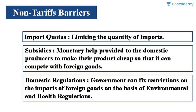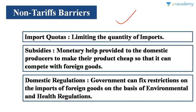There are also indirect methods — these stop imports from coming into the country without directly imposing tax. These indirect methods are called non-tariff barriers. If a country is not able to put tax on an imported good, it resorts to non-tariff barriers, such as import quotas. A country can limit the number or amount of a good that can be imported within a given period of time.